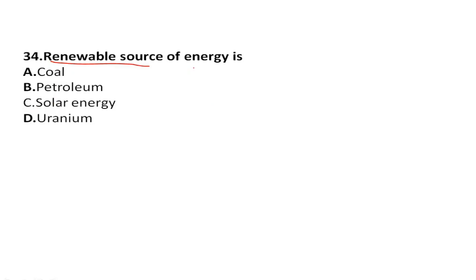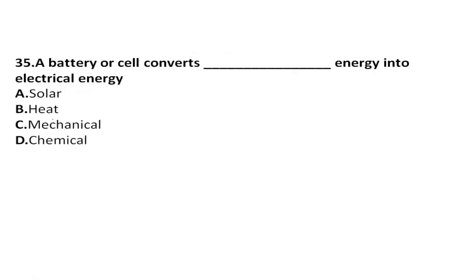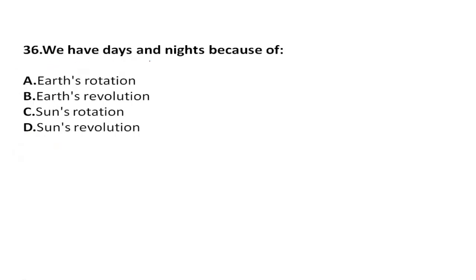Renewable sources of energy: solar energy is a renewable energy. A battery or cell converts chemical energy into electrical energy. We have days and nights because of the Earth's rotation — not Earth's revolution — please remember.